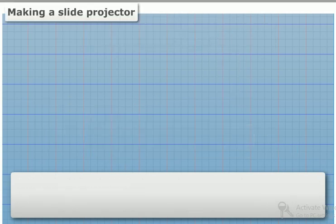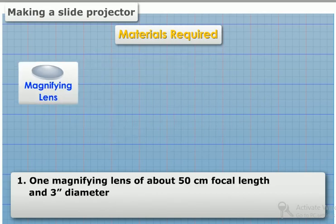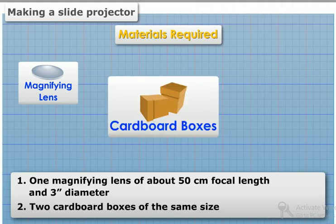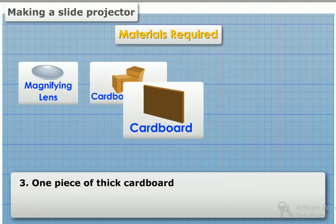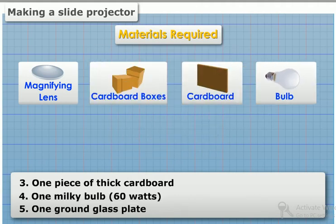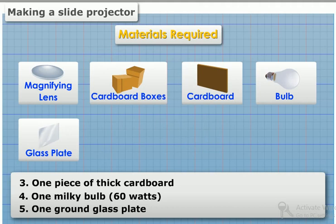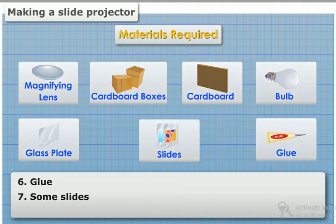Materials required: one magnifying lens of 50 centimeters focal length and 3 inches diameter, two cardboard boxes of the same size, one piece of thick cardboard, one milky bulb 60 watts, one ground glass plate, glue, and some slides.